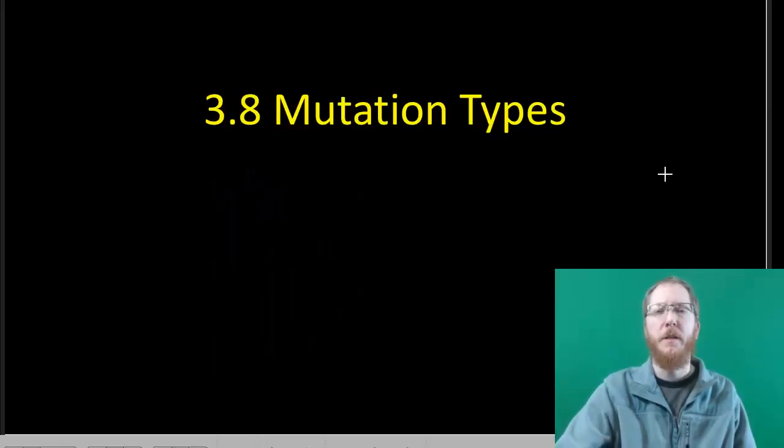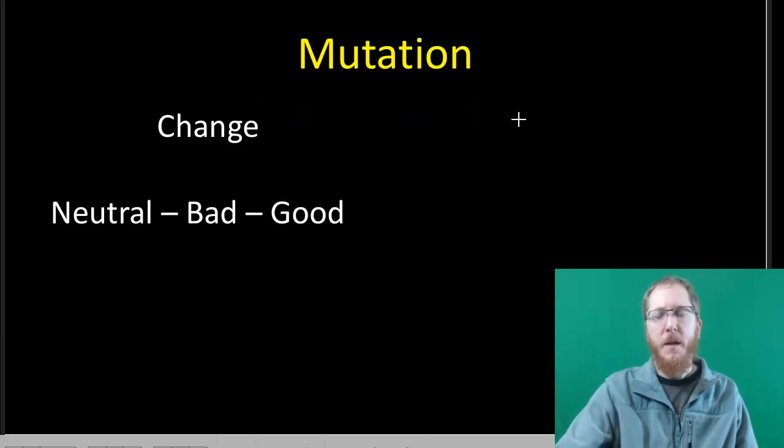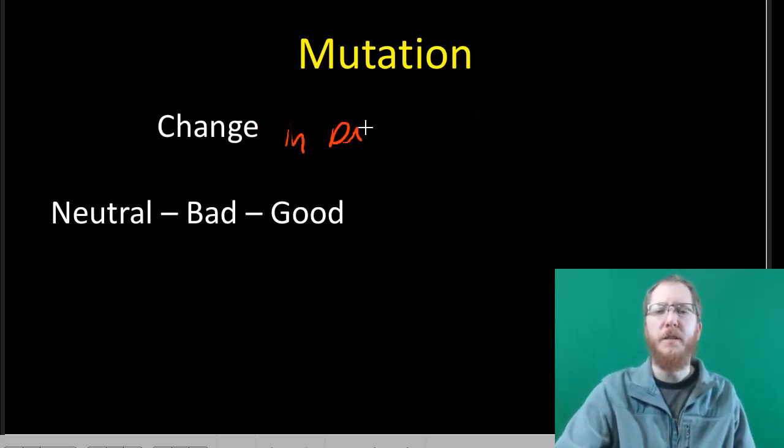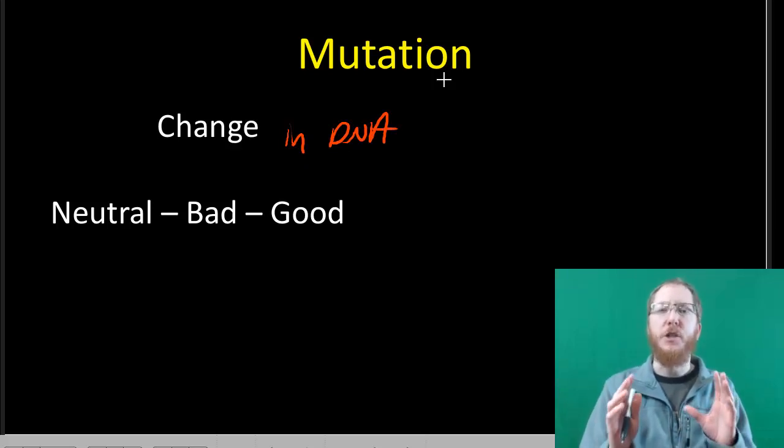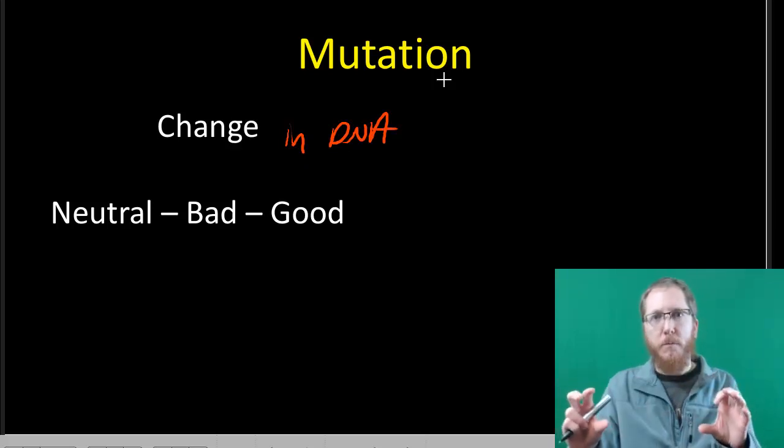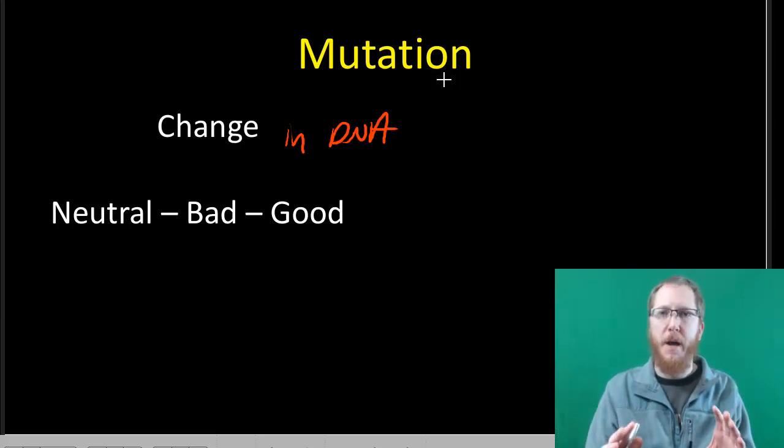Welcome to Section 3.8, where we're going to discuss mutation types. When we talk about mutations, what we're really talking about is a change in the sequence of DNA. These particular nucleotides that you have in a row, the A's, T's, C's, and G's we've talked about.